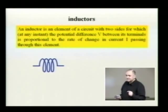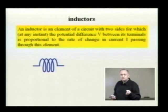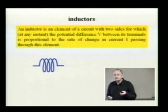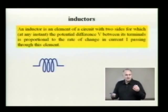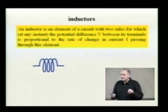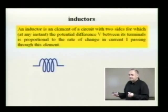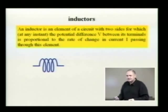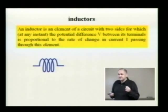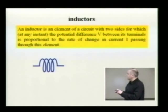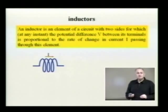If the potential difference were proportional to the current itself, it would be a resistor — not a capacitor. Here, the potential difference is proportional to the rate at which the current changes; the current must vary in order to have a potential difference across an inductor.